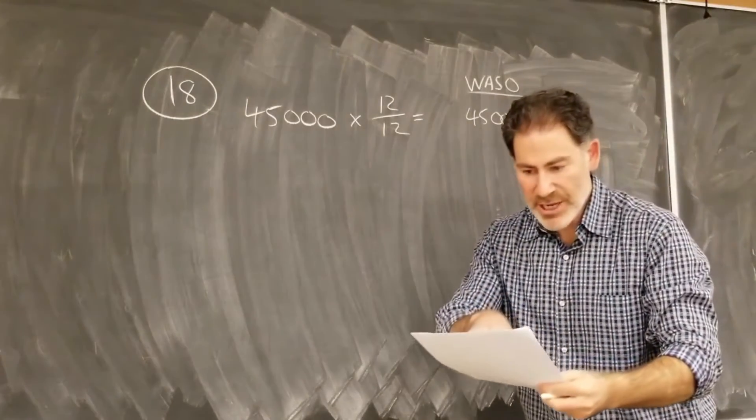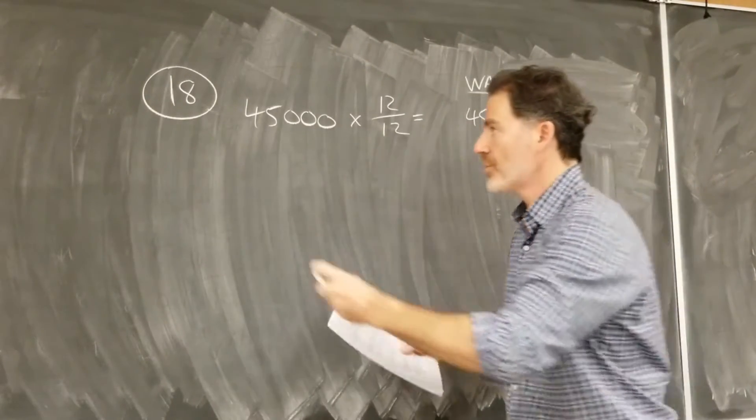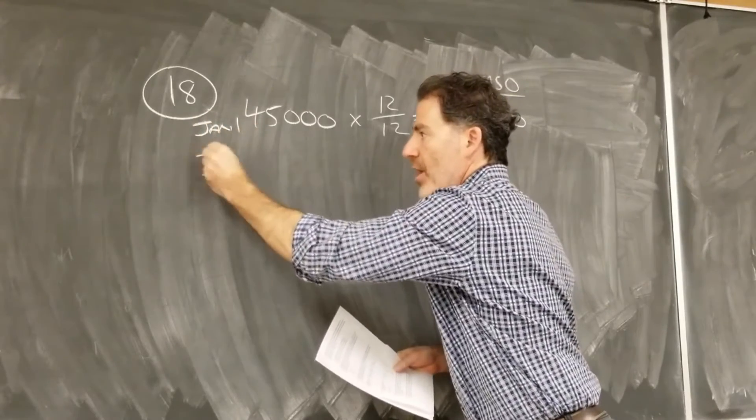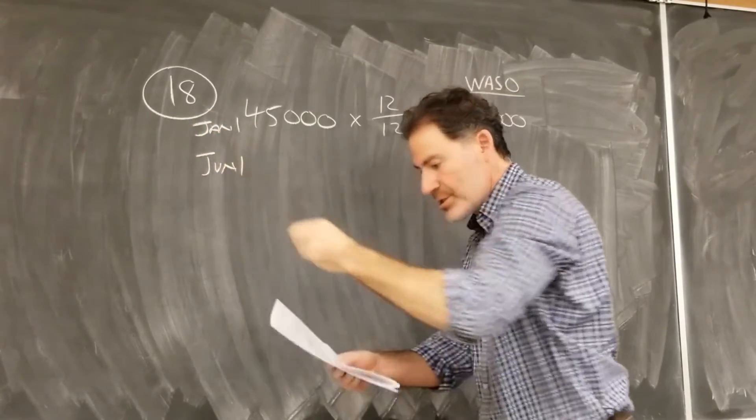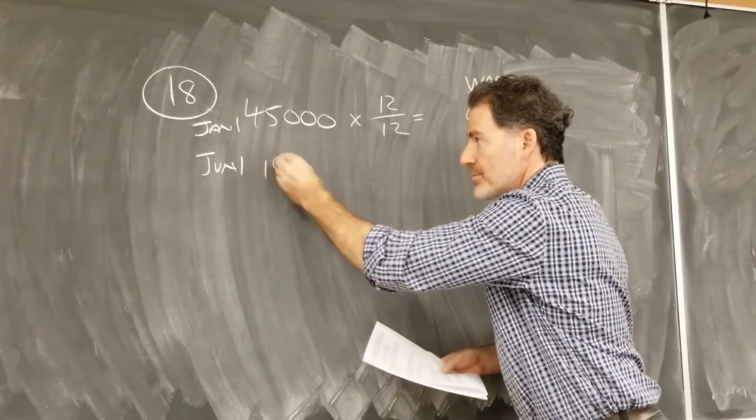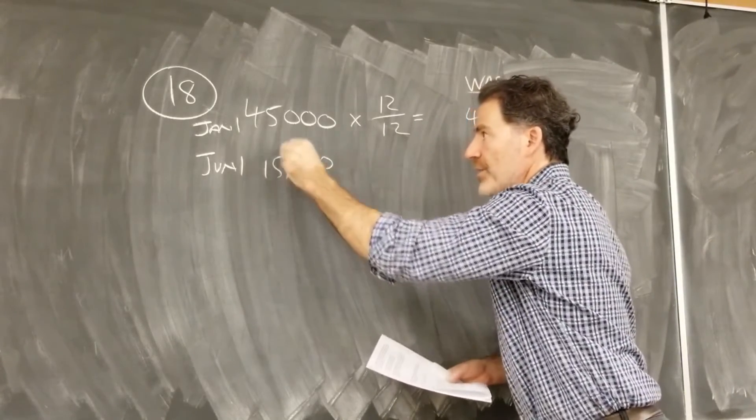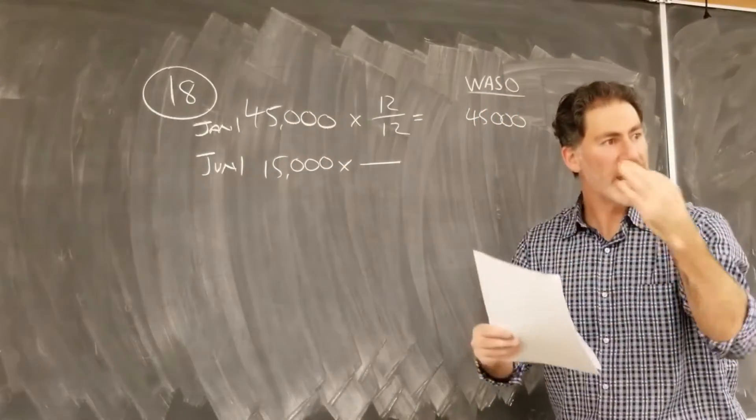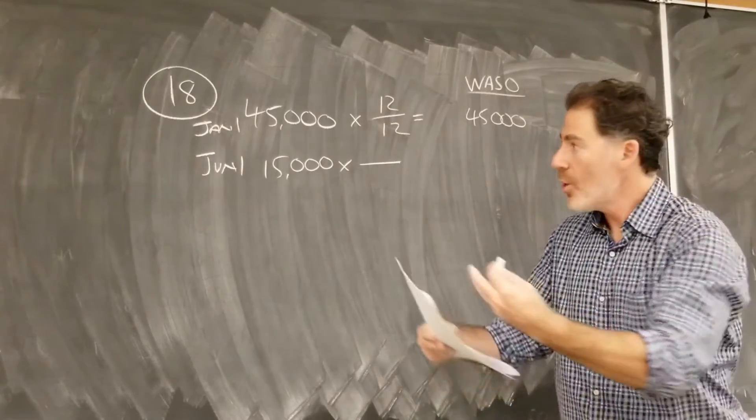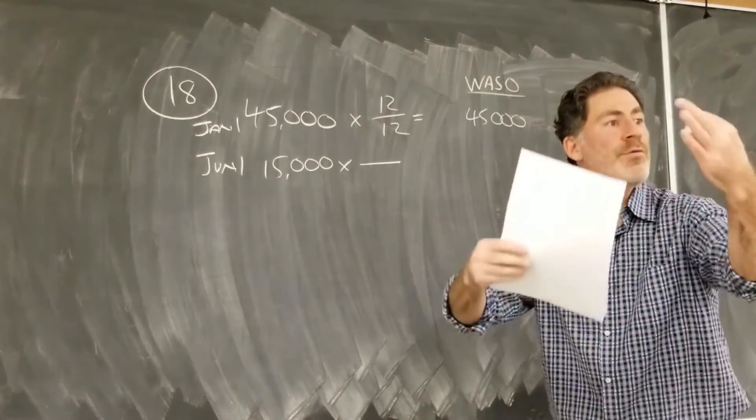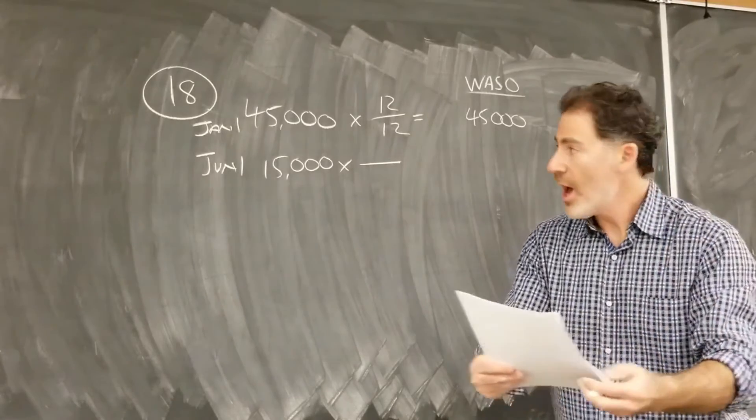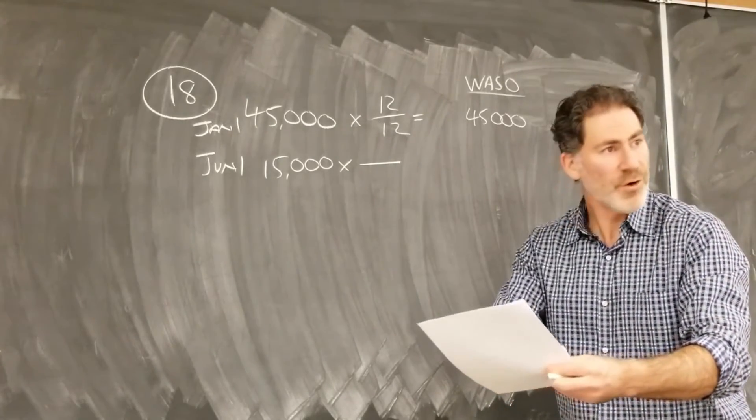Then the question tells us on June 1st, they issue another 15,000 shares. Remember our rules. When you issue shares, you include them from the date of issue forward. When you repurchase shares, you remove them from the date of repurchase forward.